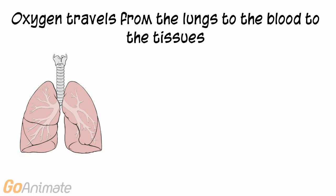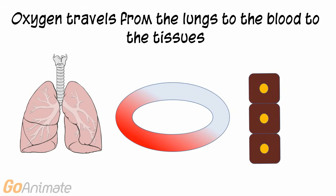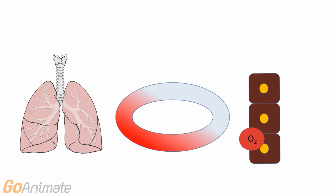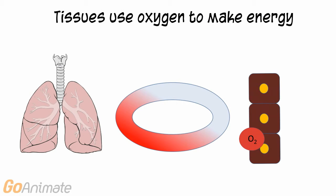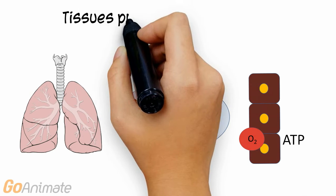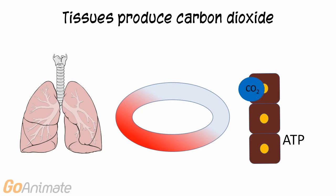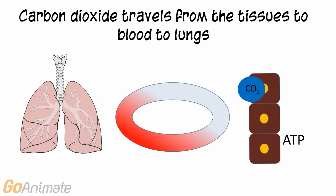Oxygen travels from the lungs to the blood and is carried to the tissues. The tissues use oxygen for making energy, and this process produces carbon dioxide. The carbon dioxide moves into the blood and is carried to the lungs to be eliminated when we exhale.